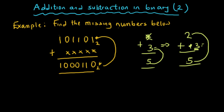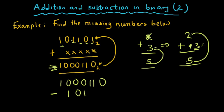So we are going to have 100110, which is the given result, minus the number on top, 101101. You have to be very careful — we have six digits, so you should line them up: one zero one one zero one.